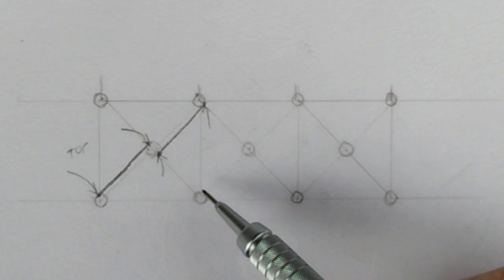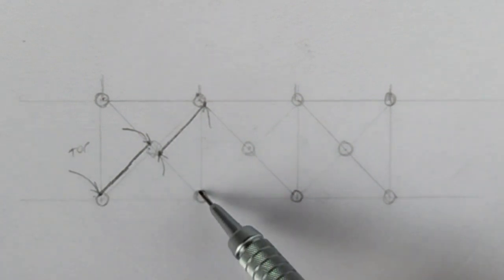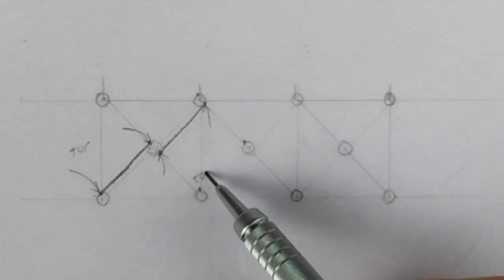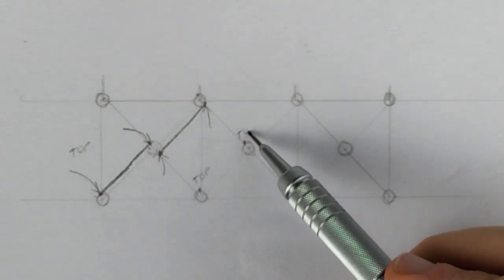We then repeat the pattern. Every row of circles will always start and finish at the same location on the circles. So top will always start and finish at the top of the circle and bottom always at the bottom.